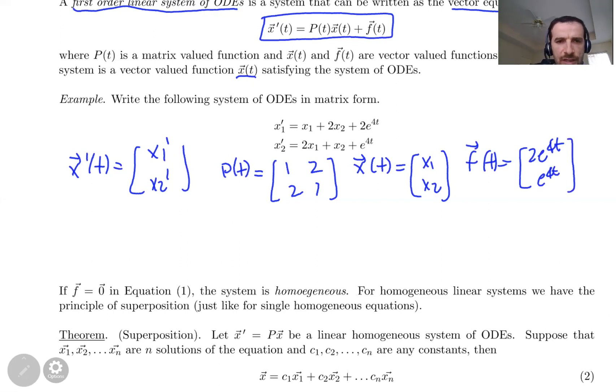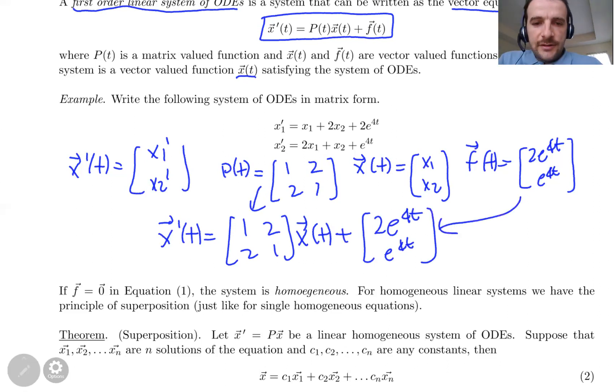So with that, I can rewrite this system this way: x prime equals P(t), which is [1, 2; 2, 1], times x(t) plus [2e^(4t); e^(4t)]. Of course, this is P(t) and this is f(t). As I said, we can use matrices and vectors to rewrite a system of ODEs.